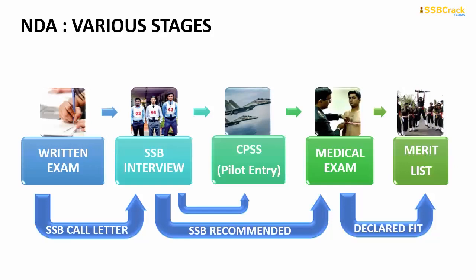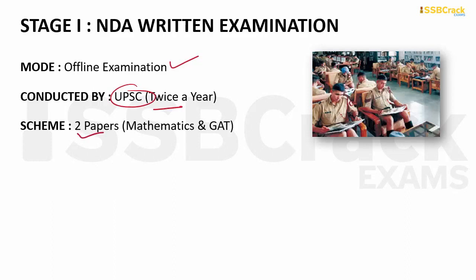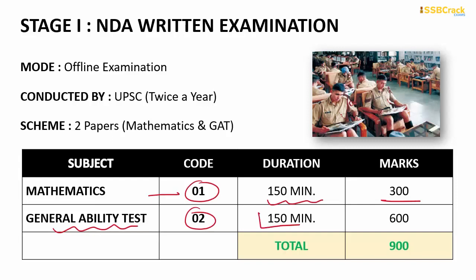The NDA written examination is an offline examination conducted twice every year by UPSC. It consists of two papers: Mathematics (code 01) and General Ability Test or GAT (code 02). Mathematics is 150 minutes duration and carries 300 marks. The General Ability Test is also 150 minutes and carries 600 marks. In total, the written examination carries 900 marks.